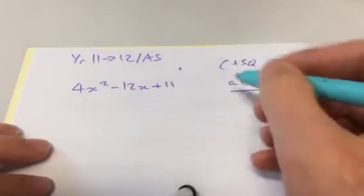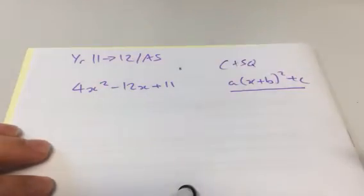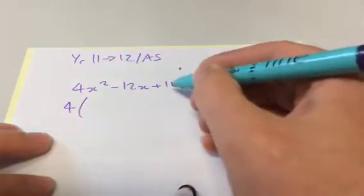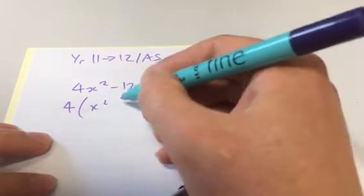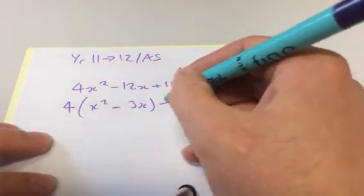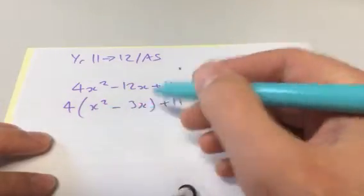But the first thing we must know is that when we complete the square, the coefficient of the x squared has to be 1. So I have to factor out that 4. I'm going to leave that 11 on its own and turn that into 3x, and then I'm going to complete the square on that middle term.